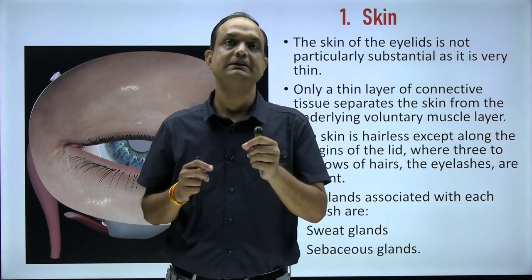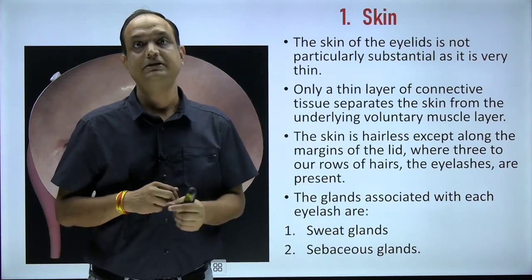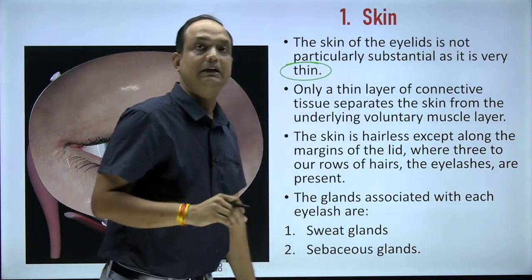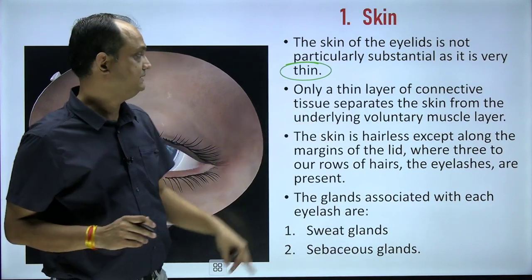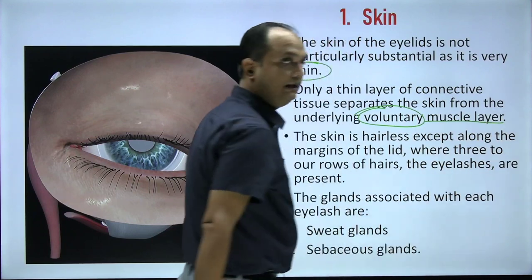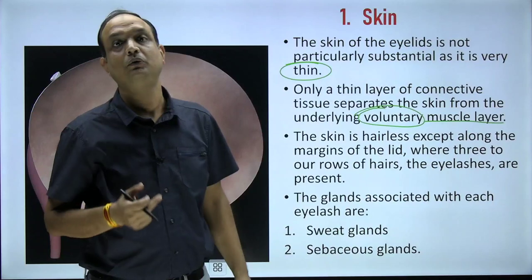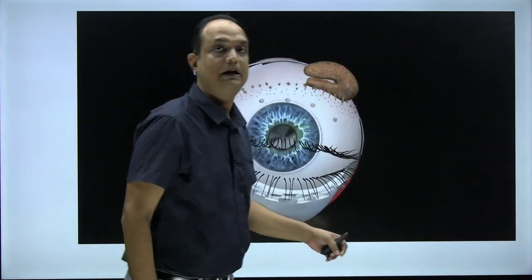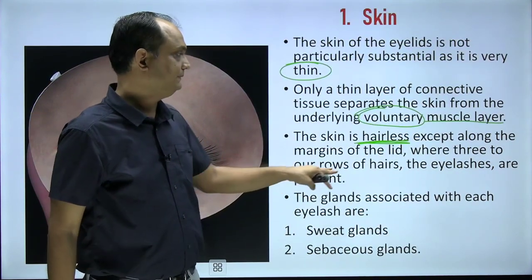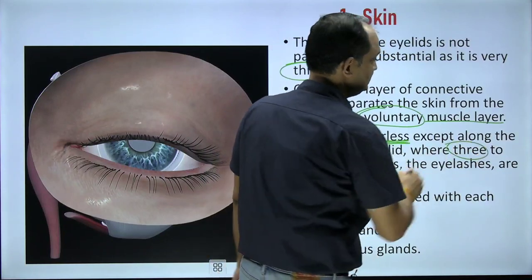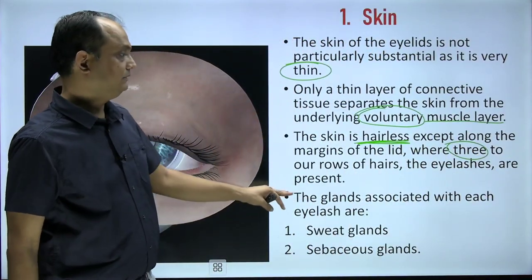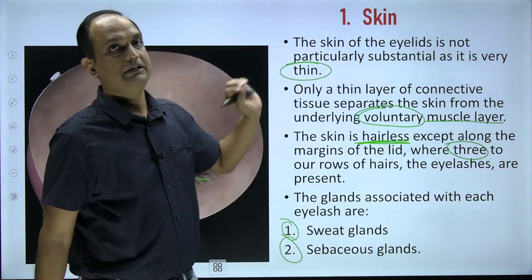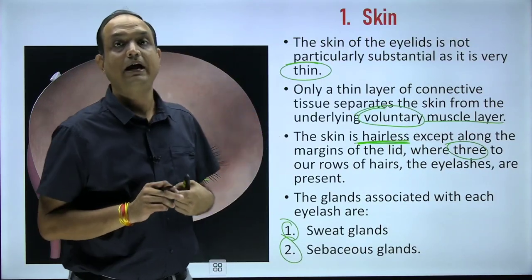The skin of the eyelid is very thin and is separated from the underlying voluntary muscle layer by a thin connective tissue. That voluntary muscle layer is the orbicularis oculi, a circular muscle. The skin of the eyelid is hairless except along the margin, where the eyelashes are present in two to three rows on both the upper and lower lids.